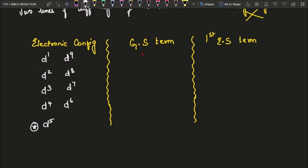How do we remember the ground state terms? Just remember the pattern: D, F, F, D. It starts with D, the middle two are F, and we end with D. At last, for D5 the ground state term symbol is S. So the full pattern is D, F, F, D, S.